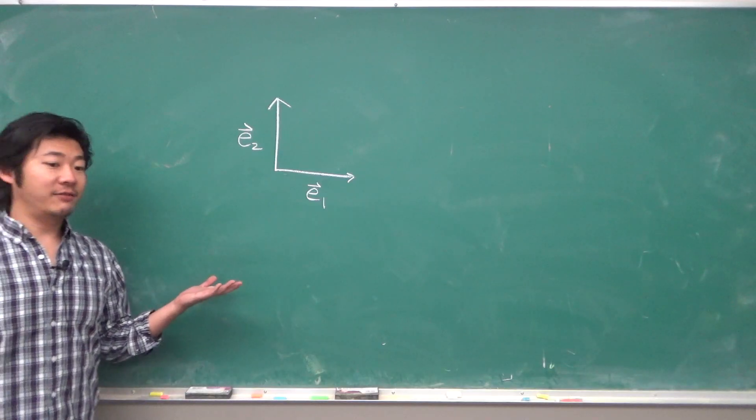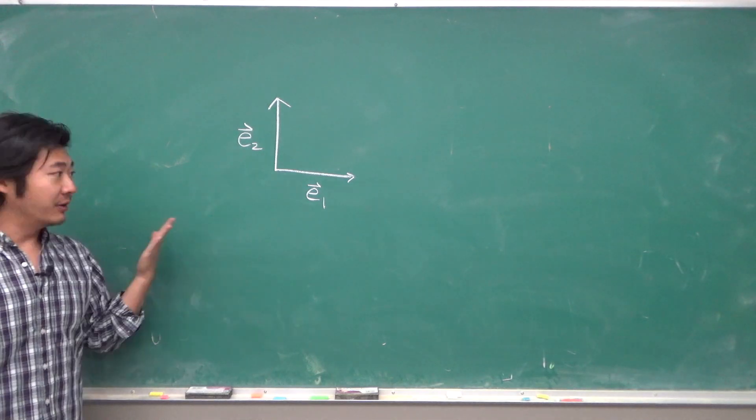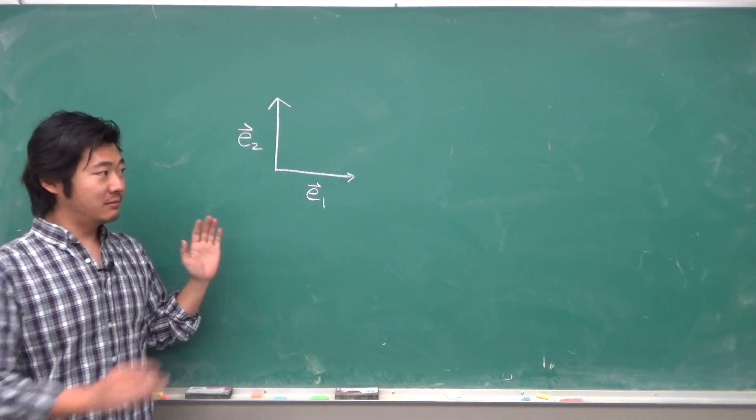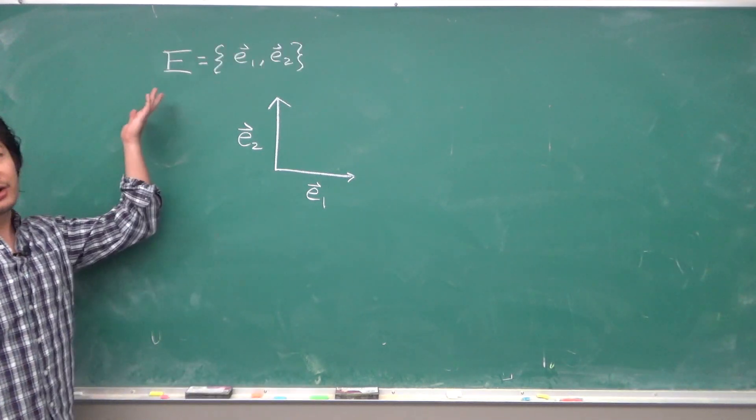So let's say we have these two linearly independent vectors, E1 and E2. They're linearly independent, and they span this plane, so it forms a basis. So let's just call that basis E.